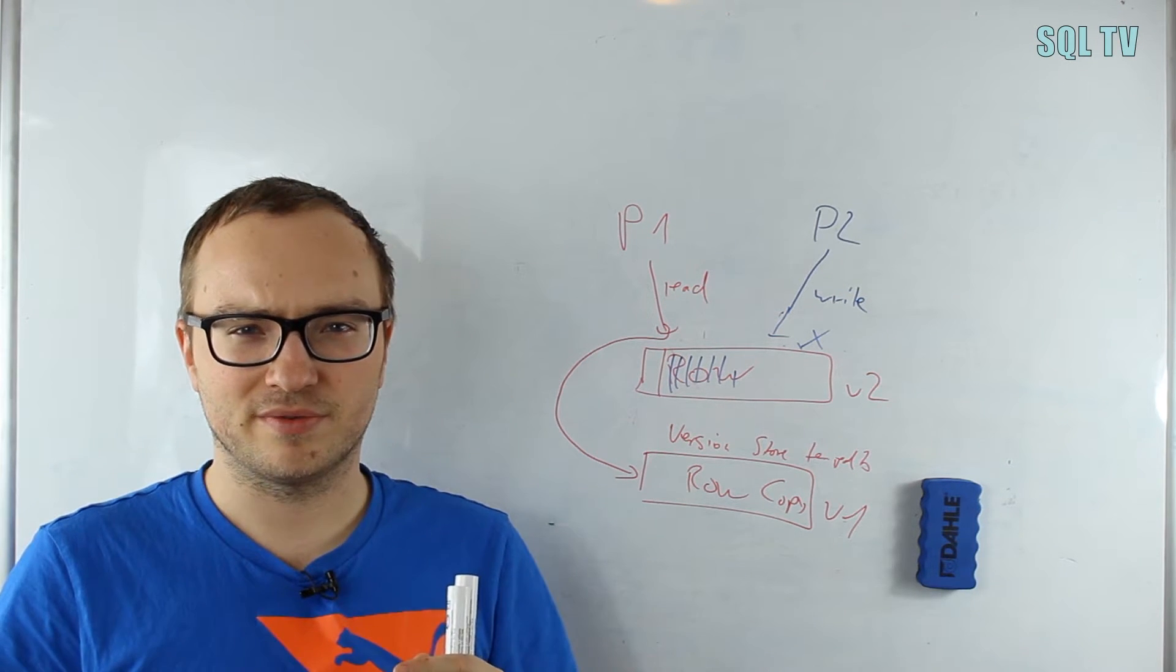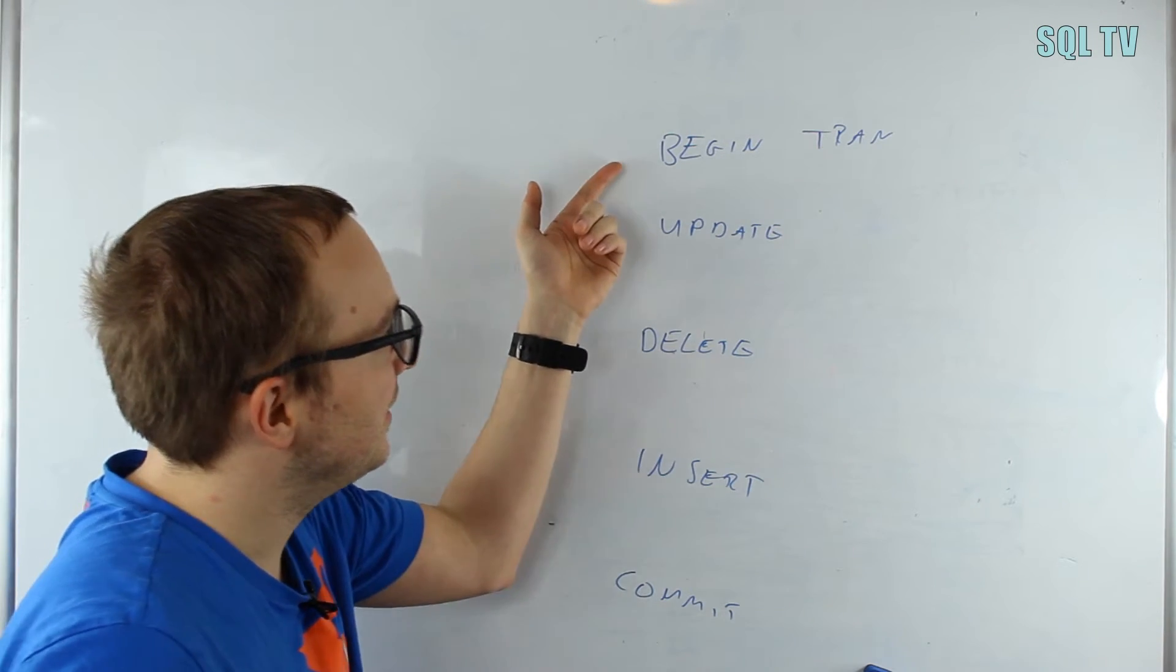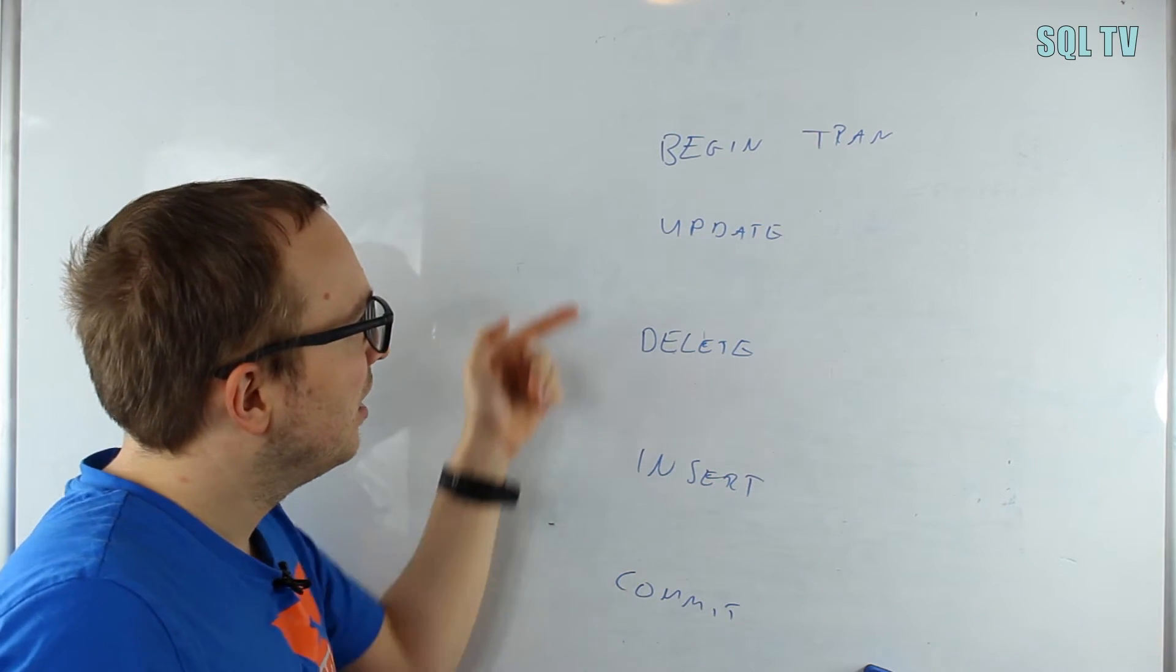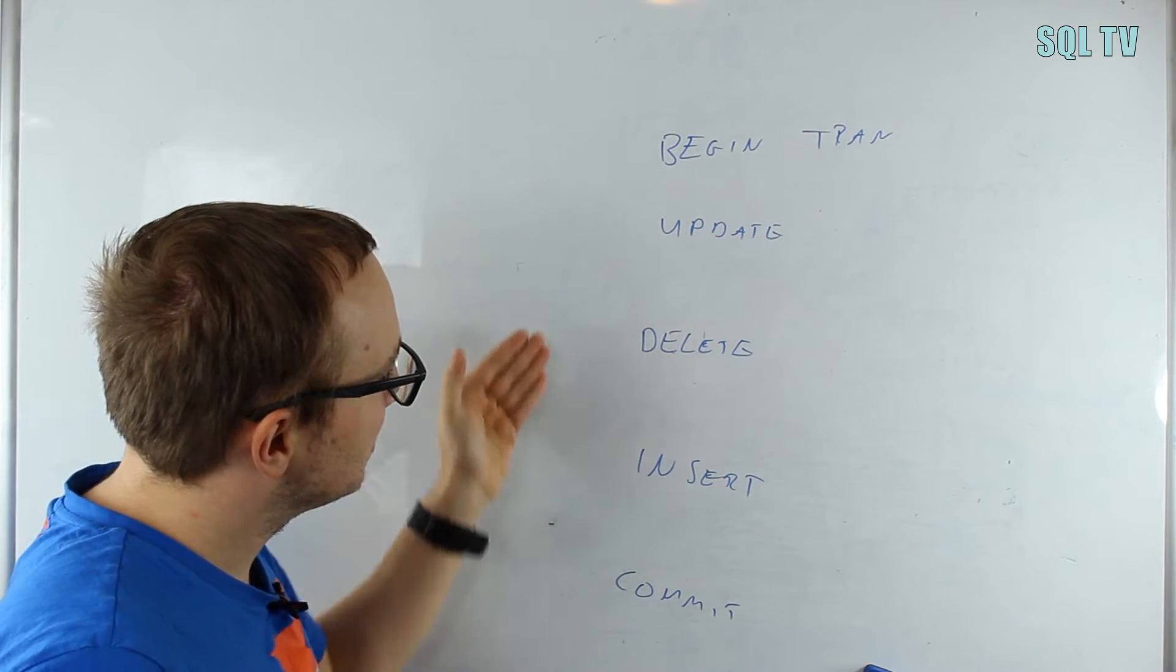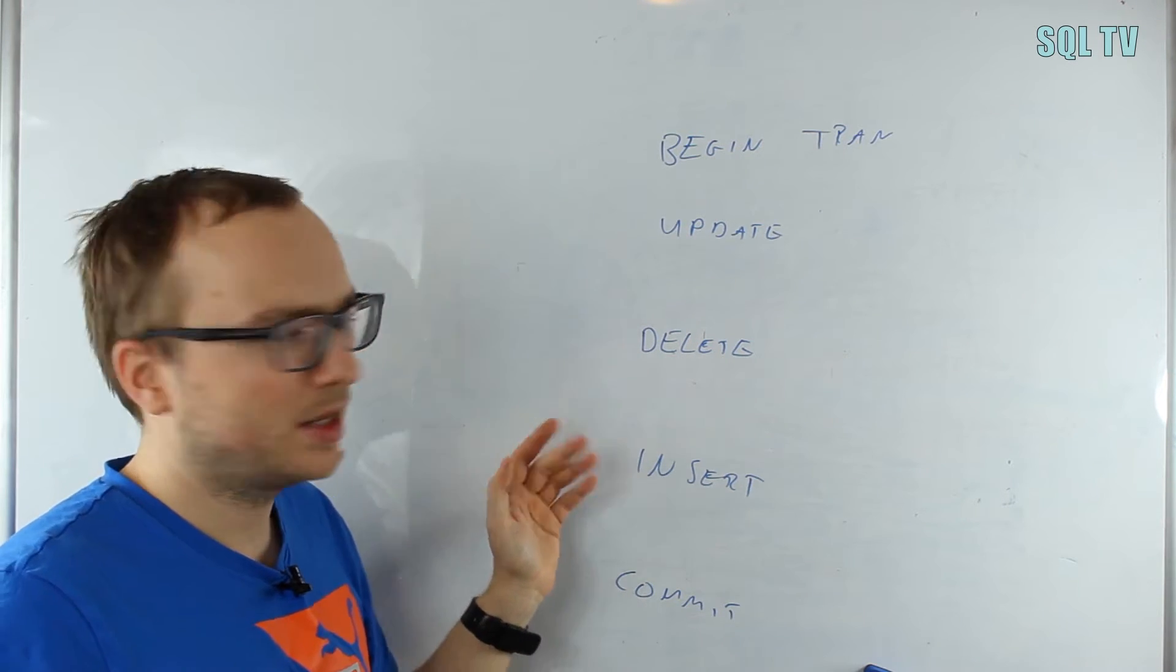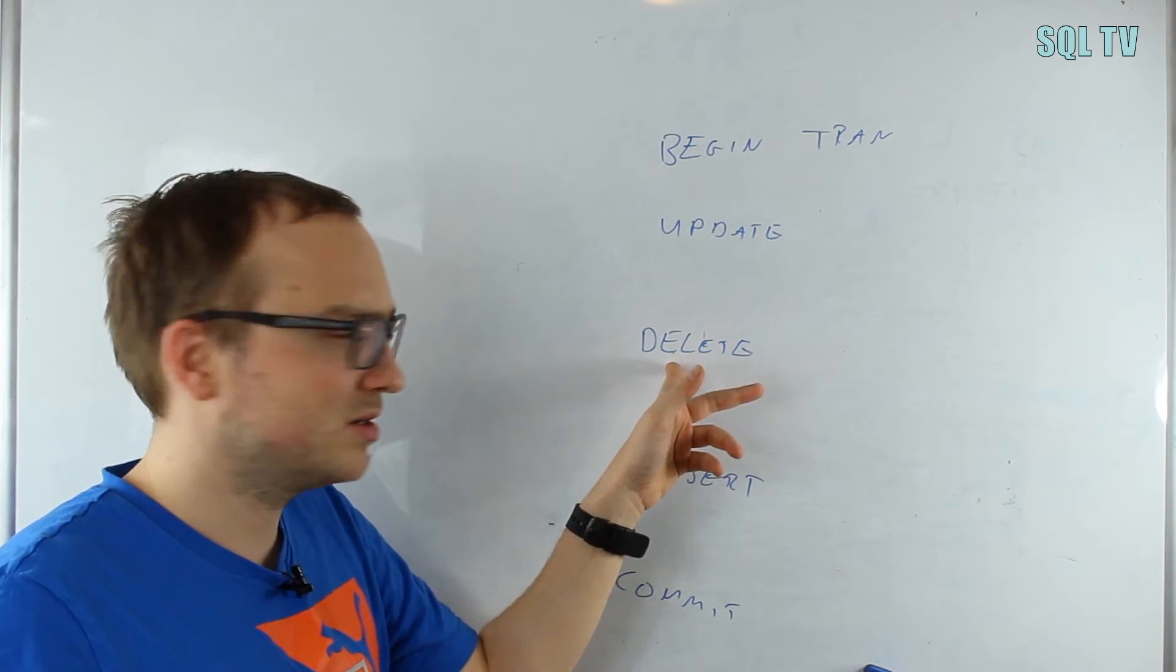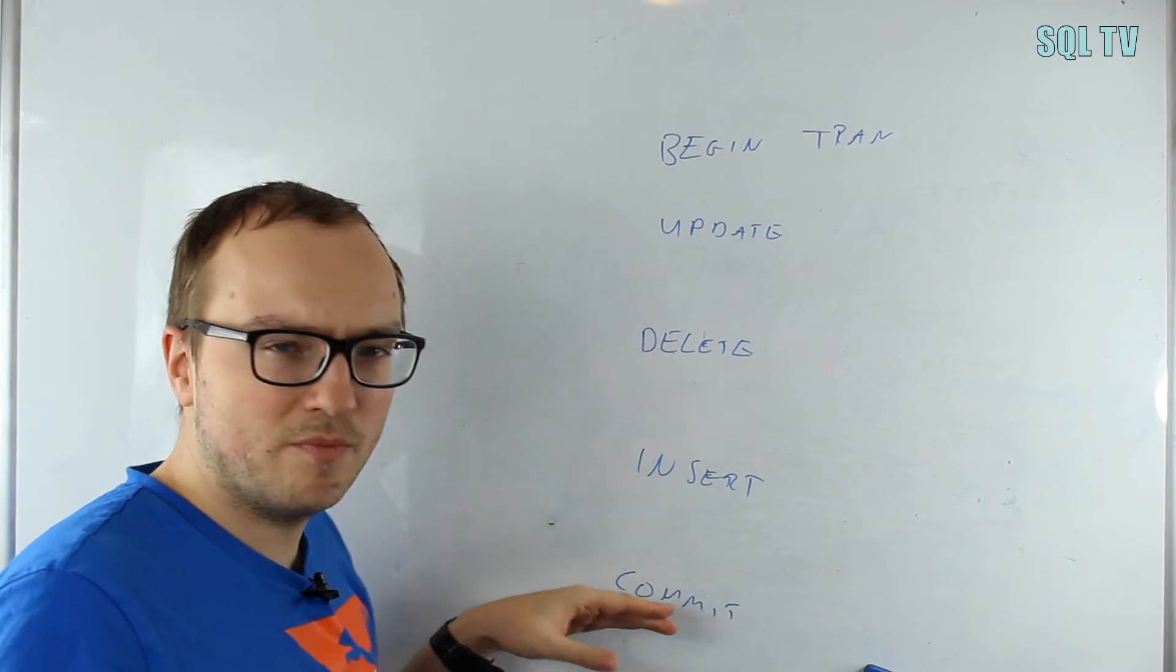Let me give you an example. In this little example we have an explicit transaction—that means I start a transaction and commit the transaction in the end. I have an update, delete, and an insert statement right here, and all of those now are one transaction unit. So if the update statement puts a lock somewhere, it is held until this commit. If the delete statement puts a lock somewhere, it is held until this commit. Everything stays until the commit.